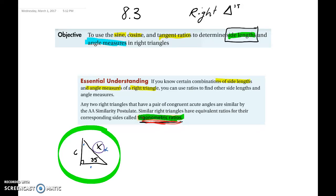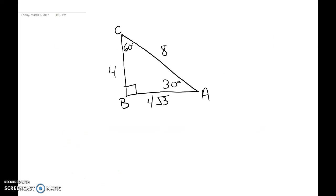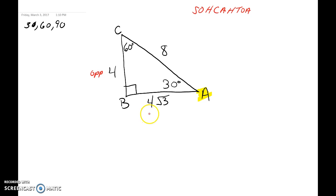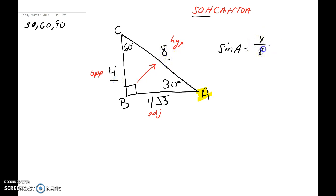Before we do that, I want to go over one quick thing. We have a 30-60-90 right triangle. If I ask you to solve for the sine of angle A, we know SOHCAHTOA. Highlight angle A — the opposite is 4, the adjacent is 4 root 3, and the hypotenuse is 8 because it's opposite the right angle. So sine of angle A equals opposite 4 over hypotenuse 8, which means sine of angle A equals one half.